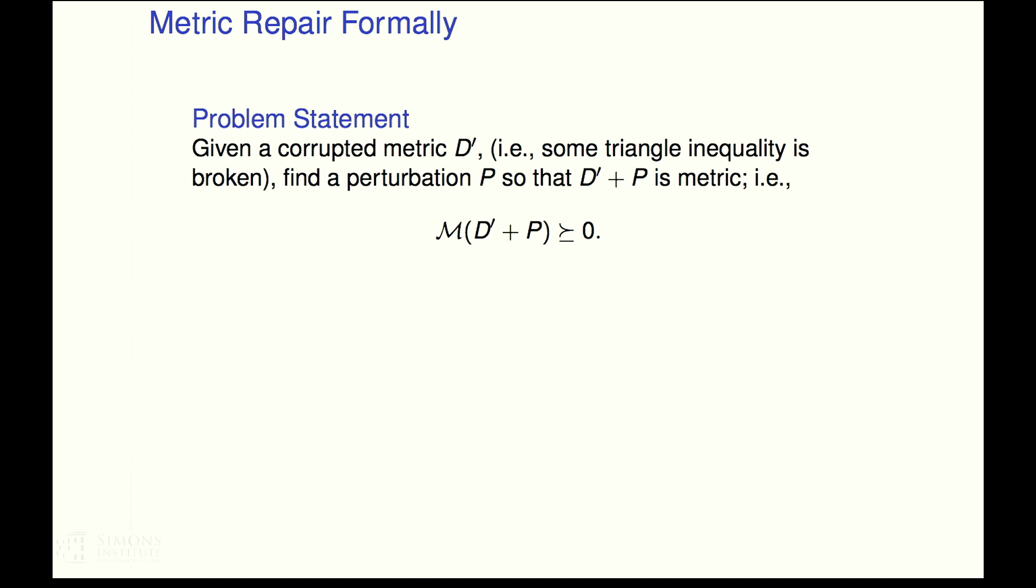So formally, I would like to, given a set of distances or given a similarity matrix, I would like to ensure that the matrix that I operate on my downstream algorithms, I would like to ensure that that data really does come from a metric. So I'm going to assume that I'm given some corrupted metric D prime, i.e. some triangle inequality is broken. And I would like to find a perturbation P so that D prime plus P is a metric.